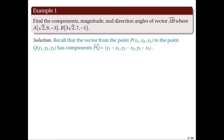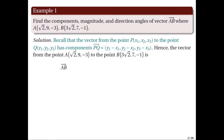To find the components of vector AB, recall that the components of a vector are obtained by subtracting the coordinates of the initial point from the coordinates of the terminal point. Hence, the vector from A to B has components (3√2 − √2, 7 − 9, −1 − (−3)), which simplifies to (2√2, −2, 2).